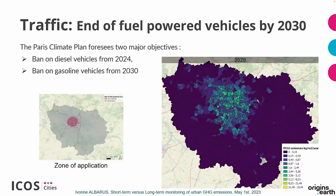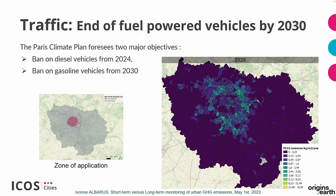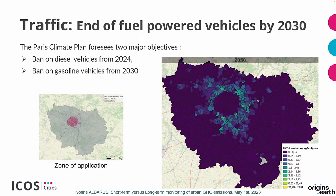For the traffic sector, Paris advocates banning fuel-powered cars by 2030 from a defined zone. The resulting emission drop is concentrated only in that area, which actually highlights the importance of inter-regional collaboration — cities cannot focus only on their own boundaries but need a broader regional approach.